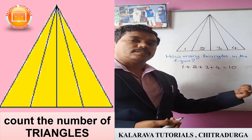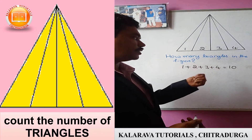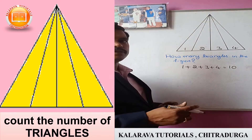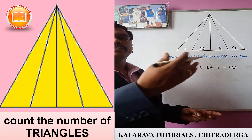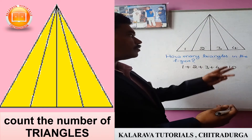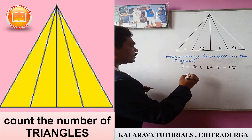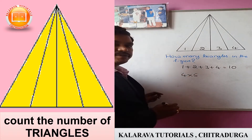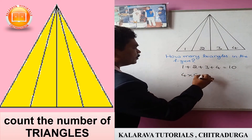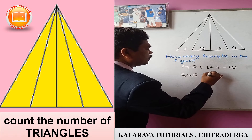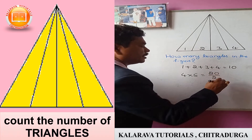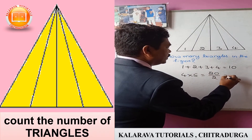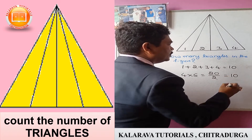There is another method to find out this one also. Here there are 4 triangles. You have to take the next number, that is 5 — after 4 comes 5. So you have to multiply 4 by 5: 4 into 5 equals 20. You have to divide this by 2, that is equal to 10 triangles.